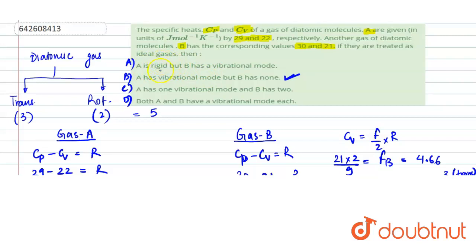Option C, A has 1 vibrational mode and B has 2, makes it incorrect since B has 0 vibrational degree of freedom. Option D, both A and B have a vibrational degree of freedom, which also is incorrect since B has 0 vibrational degree of freedom. So, the correct answer would be option B. I hope this helps you with the answer. Thank you.